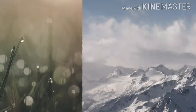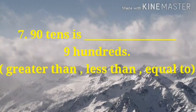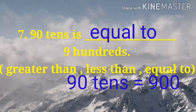Number 7. 90 tens is dash 9 hundreds. Greater than, less than or equal to. Compare the numbers. Yes, 90 tens is equal to 900.